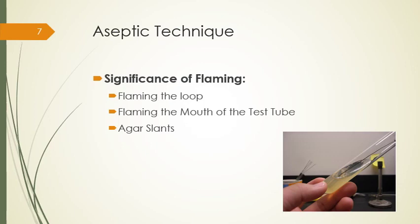Cultures are often transferred to agar slants in addition to broth tubes and agar plates. An agar slant is a test tube containing agar in which the solid agar forms a slant. When inoculating an agar slant, draw the loop containing the inoculum very lightly over the surface in a zigzag formation, being careful not to break the surface. A needle can be used instead of a loop to inoculate an agar slant by stabbing the needle containing the inoculum onto the agar.